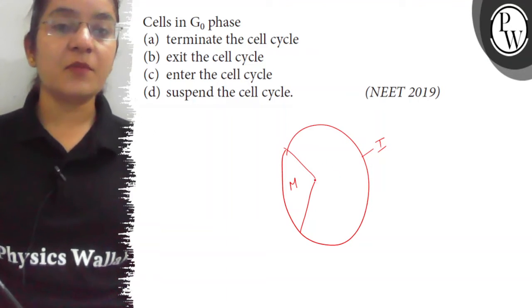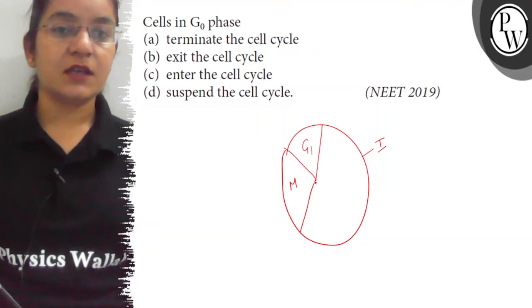After completing cell division, the cell enters the G1 phase and then enters the S phase for DNA replication and then finally to the G2 phase.